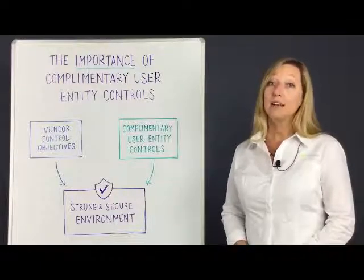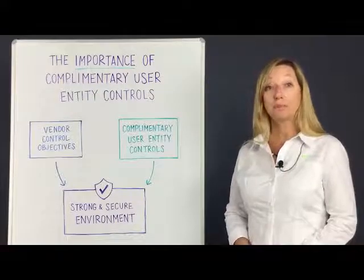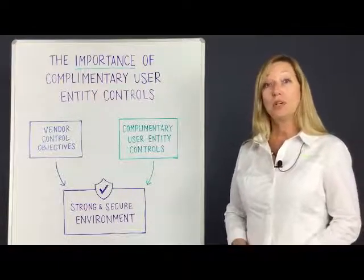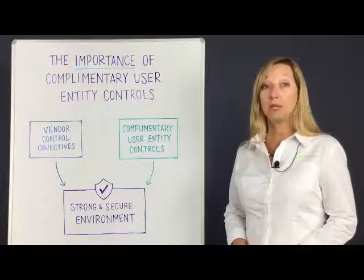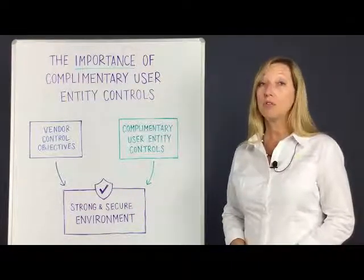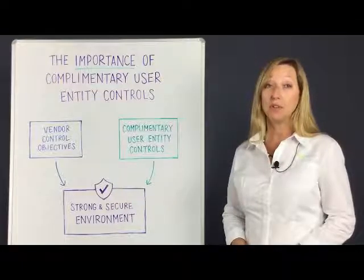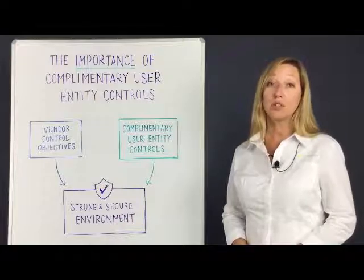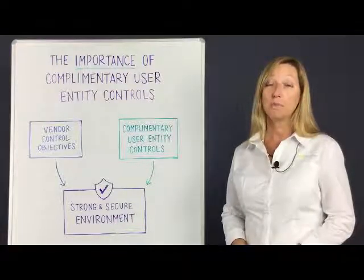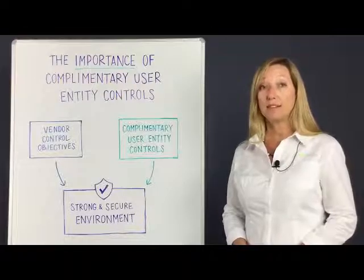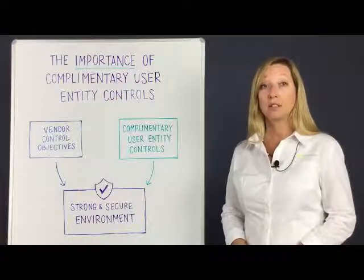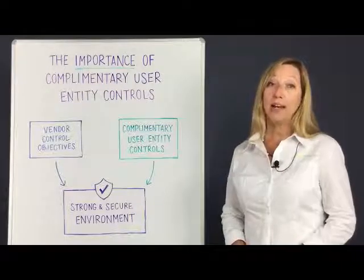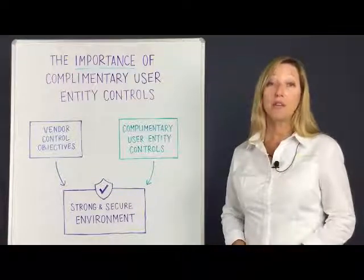Secondly, have the complementary user entity controls been implemented? For example, a common control is: user entities should establish controls to supervise, manage, and monitor the use of vendor services by user entity personnel. Access to subsystems and sensitive transactions is granted and restricted to authorized individuals. Are you regularly reviewing who has access to your system internally? Are you documenting these access reviews? Is there a process for adding, removing, or modifying a user's access?